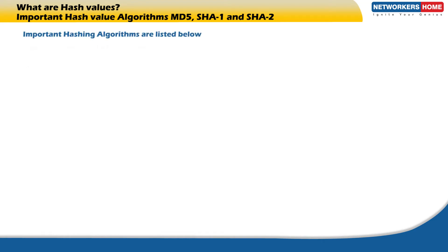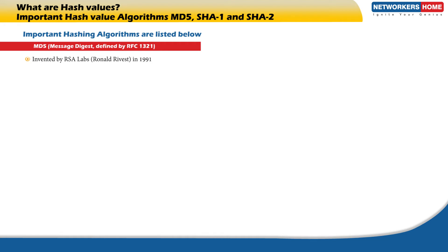Important hashing algorithms include MD5 — Message Digest, defined by RFC 1321. The MD5 hashing algorithm was invented by RSA Labs' Ronald Rivest in 1991 to replace its previous version MD4. When data is fed to MD5, it generates a 128-bit hash value stream as a 32-digit hexadecimal number. Hash value collisions have been reported for MD5.